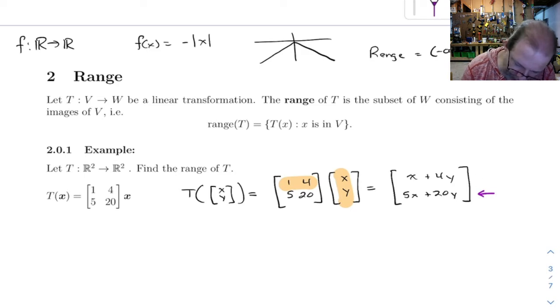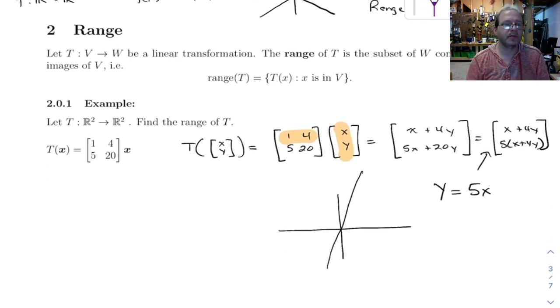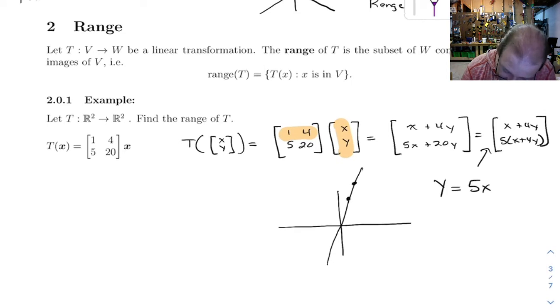The thing to notice here is this is 5 times this up here. So this is equal to, or in other words, the points you get off of here, the y coordinate is 5 times the x coordinate. So you get y equals 5x. So that means the range is all the sets of points where y is equal to 5x. This thing is only going to give you points that lie on the line y equals 5x.